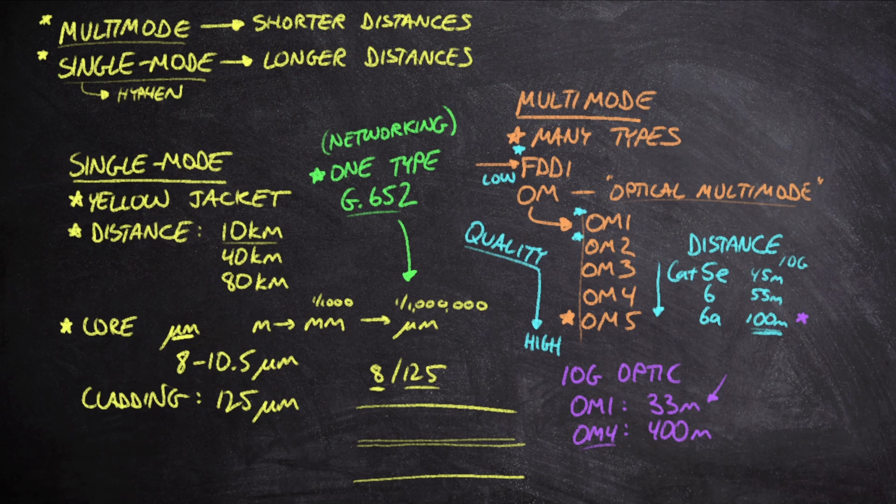Multimode fiber is built out in the same way with core and cladding, but the core is not as small with multimode. The core is usually 50 micrometers, although with FDDI grade and OM1, these are actually 62.5 micrometer cores.